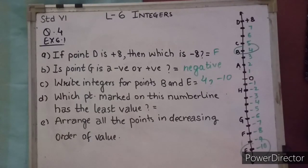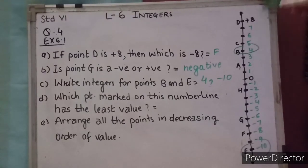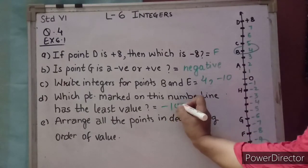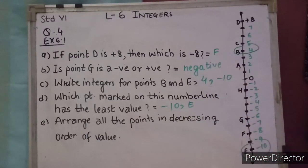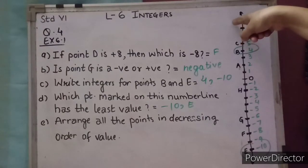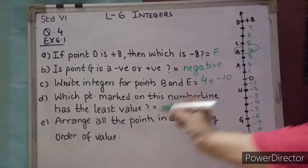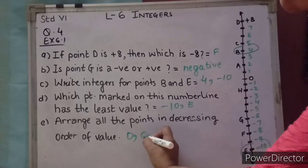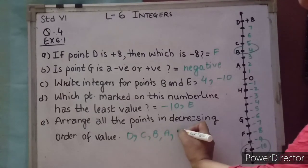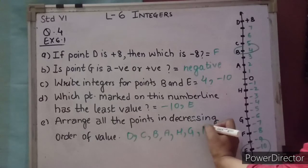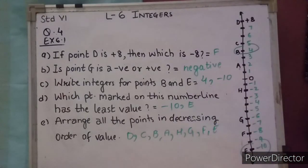Which point marked on this number line has the least value? Least means the smallest value. The numbers above or to the right have greater value. The one furthest down is minus 10, so the least value is minus 10, that is point E. Arrange all the points in decreasing order: D, C, B, A, H, G, F, and last is E. So D is the highest number and E is the smallest.